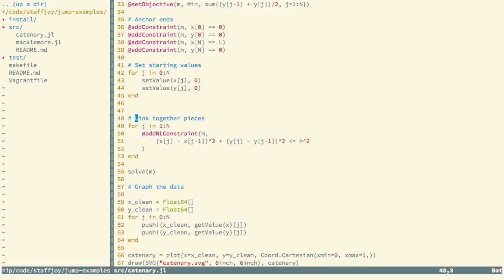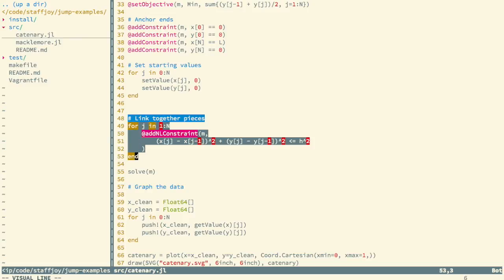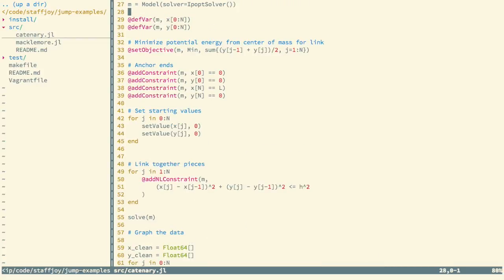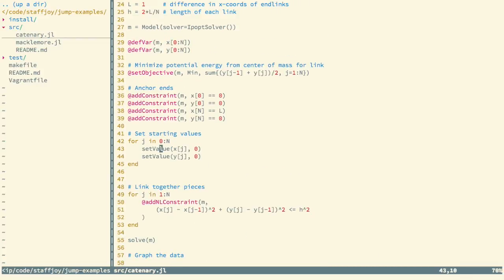Then basically we link the chains together. We have the length of each chain defined up here as h. We're basically saying delta x squared plus delta y squared has to be less than or equal to h squared, which means the distance between each point cannot be more than the length of an individual chain link.